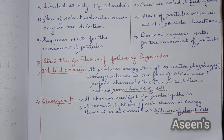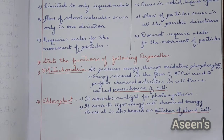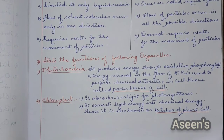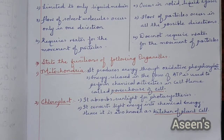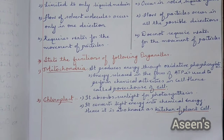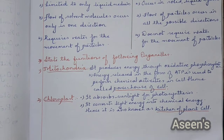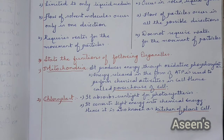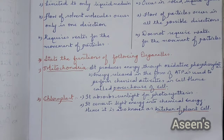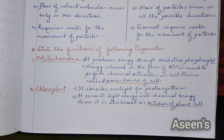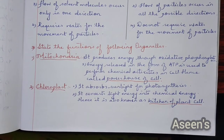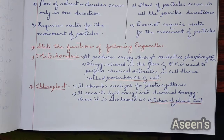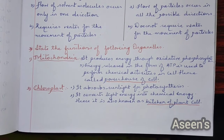Mitochondria: it produces energy through oxidative phosphorylation. Energy released in the form of ATP is used to perform chemical activities, hence it is called the powerhouse of the cell. Chloroplast: it absorbs sunlight for photosynthesis, and hence it is also called the kitchen of the plant cell.